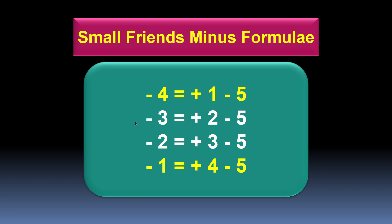The next formula is minus 3 equals plus 2 minus 5. The third formula is minus 2 equals plus 3 minus 5. And the last formula is minus 1 equals plus 4 minus 5.